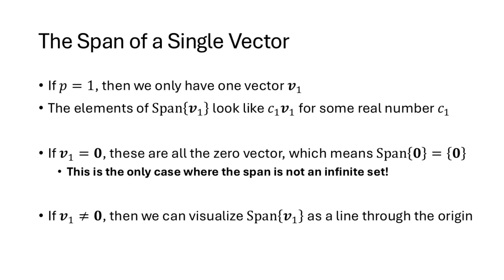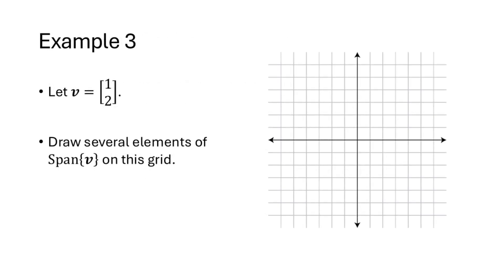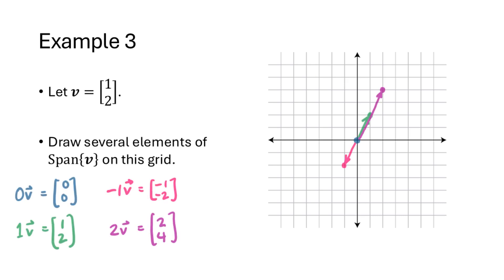Let's visualize that with an example in R2. With the single vector v, I've drawn 0v, 1v, −1v, and 2v on the grid, and you can see that all of these vectors lie on a single line that goes through the origin.